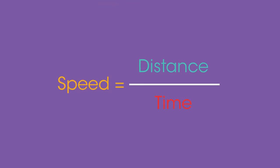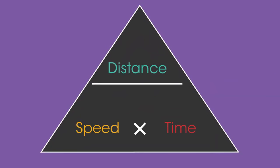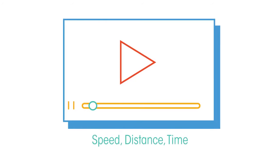You should already know that speed is a measure of the distance an object travels in a certain time, and that it's calculated using this equation, which can also be remembered by using a formula triangle. If you haven't calculated speeds before, watch this video first.